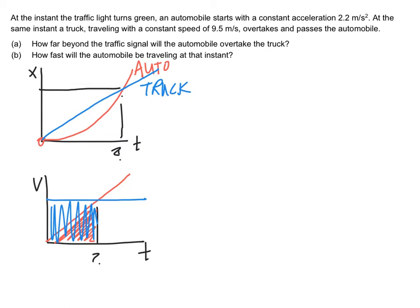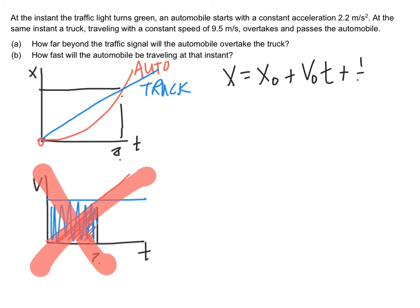It hasn't traveled the same distance. So in summary here, do not use this graph. Stick with the position versus time graph and therefore the position versus time equation. All right, so here's our basic kinematics equation that we're going to work from. And we're going to write two equations here. So for the automobile, the initial position.